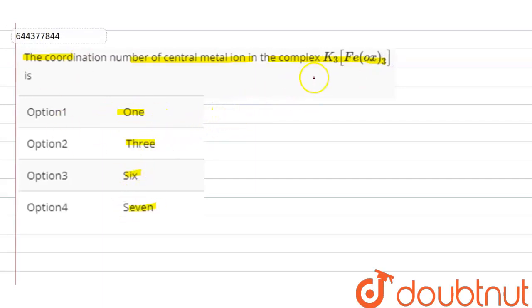In the given question, the ligand present here is ox. Ox is oxalate. Now what is oxalate? Oxalate is a ligand which can donate two lone pairs of electrons.